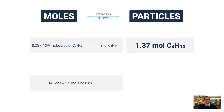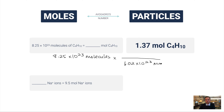The answer for the first practice problem is 1.37 moles of C₄H₁₀. I start with 8.25×10²³ molecules, multiply so that 6.02×10²³ molecules is on the bottom and one mole is on top. Molecules cancels out. Put parentheses around your scientific notation values — if you get a crazy exponent like 47, you forgot the parentheses. Dividing gives 1.37 moles, rounded to three significant figures.